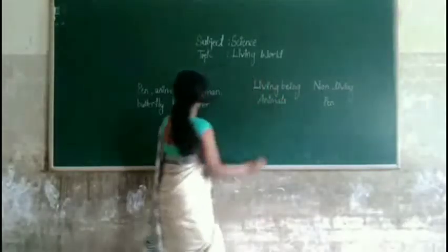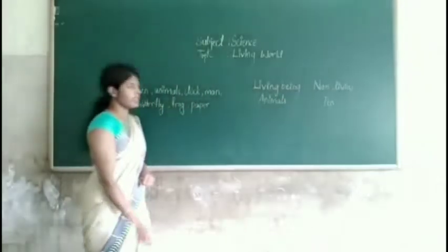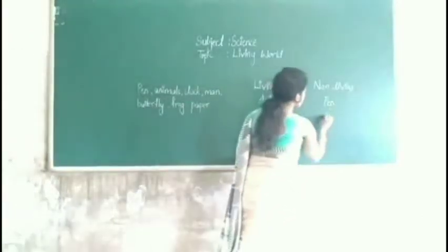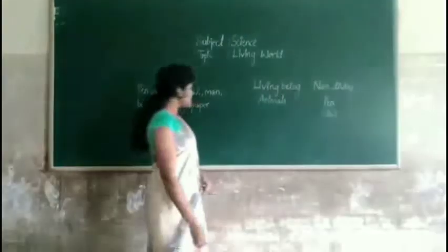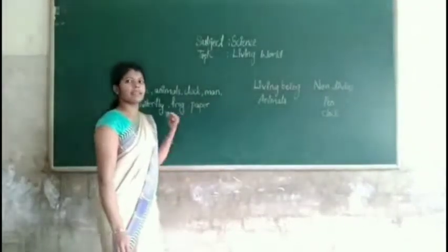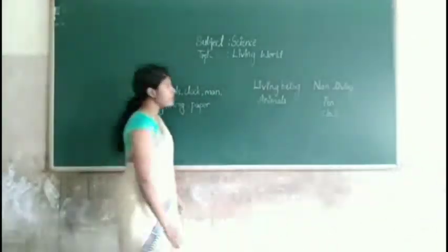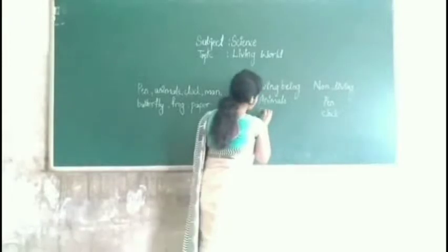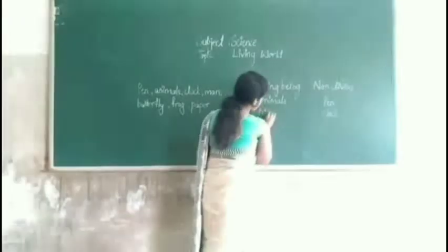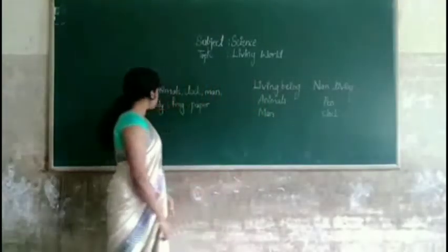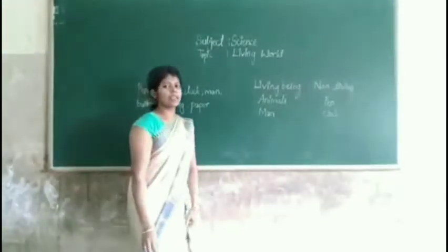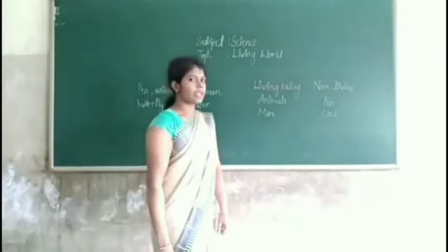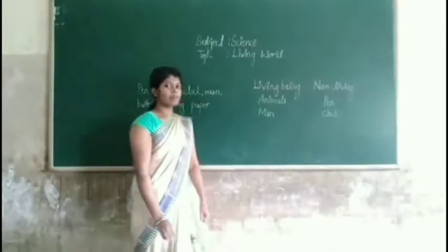Next one is plant. Plant is non-living. And next, man. Man is a living organism. Next example, butterfly. Butterfly is living or non-living? Butterfly is also a living being.